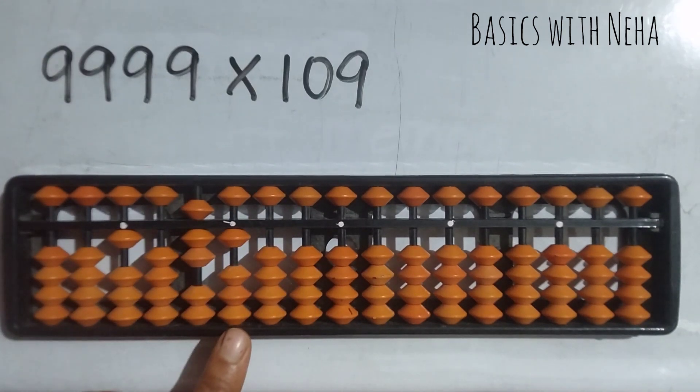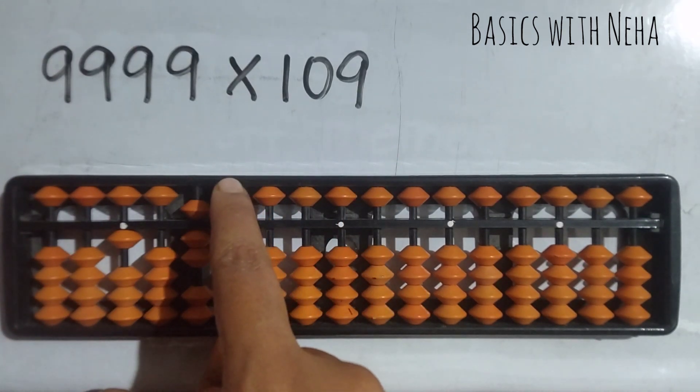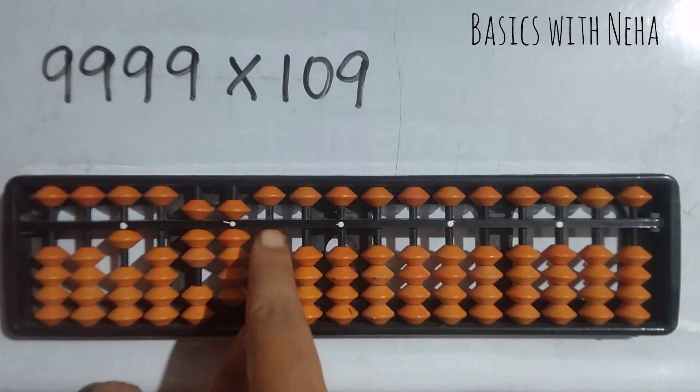Again, nine zeros are zero, zero zero. Nine nines are 81, so I'll place eight and one. We are done with the second nine.